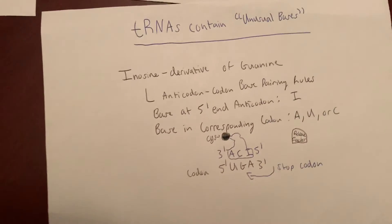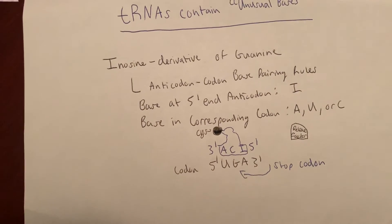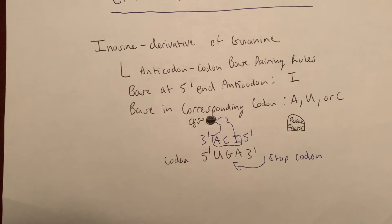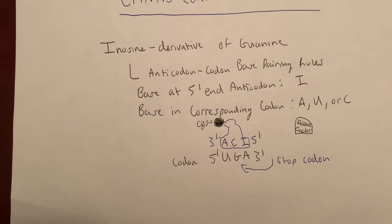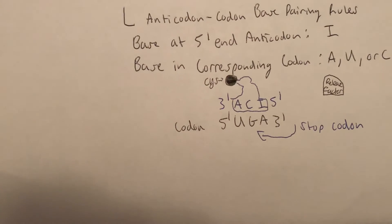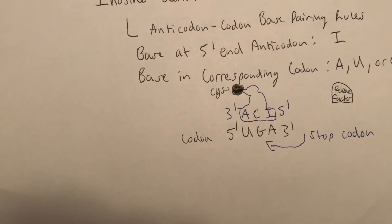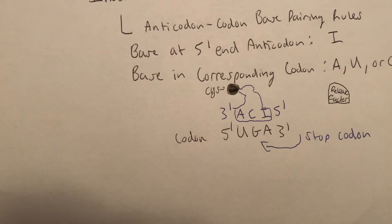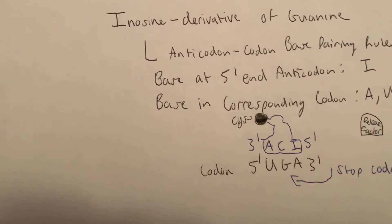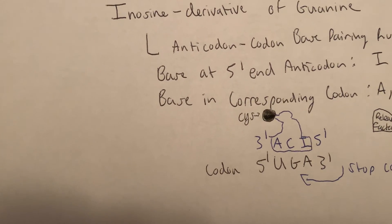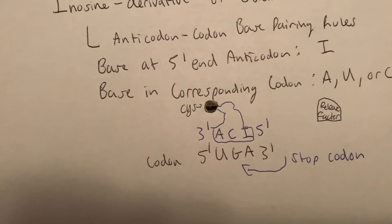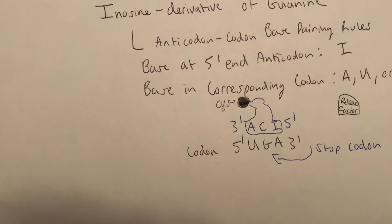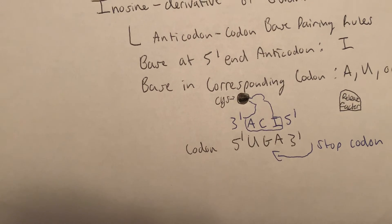tRNA contains unusual bases, like inosine, which is a derivative of guanine. Inosine can pair with A, U, or C. If instead of pairing with A it pairs with C, this creates the codon UGC, which codes for the cysteine amino acid. Rather than bringing in a release factor, this can cause translation to continue without stopping, which could lead to cancers.